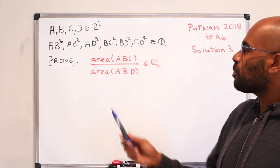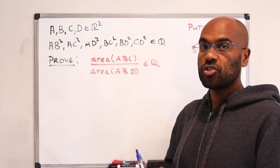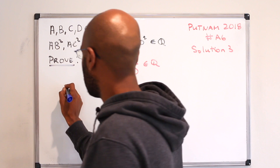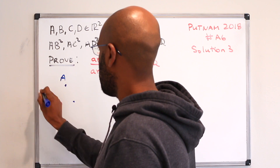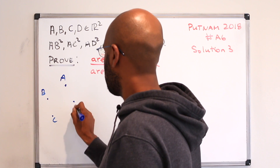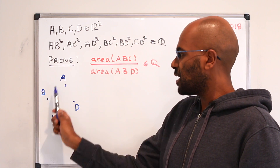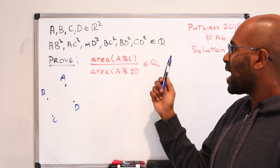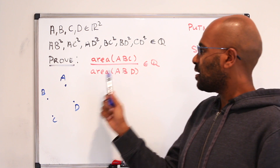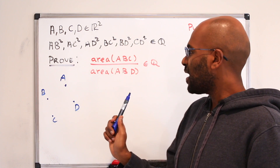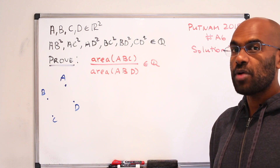The problem involves four points in the plane — four points no three of which are collinear, so they sit generically like this, maybe A, B, C, and D. You're given the information that the square of the lengths between any pair of these is a rational number, and you're trying to prove that the area of triangle ABC divided by the area of triangle ABD is itself a rational number.